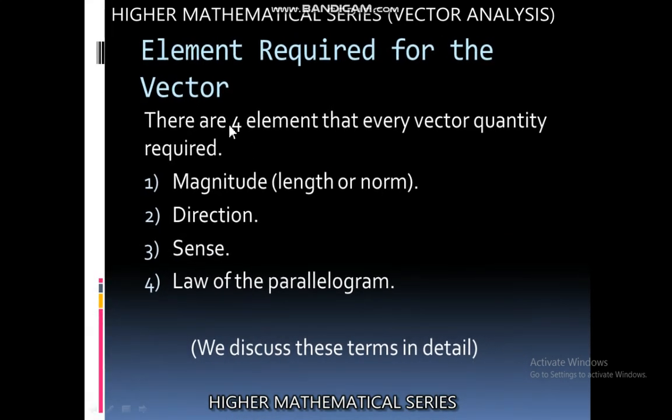For every vector quantity we have to check these four values. If these four values are present, then we can say this quantity is a vector quantity. This is the criteria for checking whether the quantity is scalar or vector. First is magnitude, second is direction, third is sense, fourth is law of parallelogram.